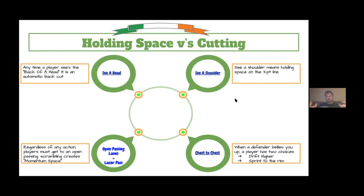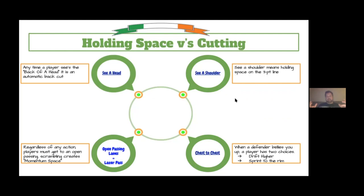In terms of holding space and cutting, we speak about: see a head — that's a back door cut. See a shoulder — that's holding space. Chest to chest — two options: we can either drift high and play a high offense, or we can sprint back into space to attack. But the most important thing for us is always being in an open passing lane. When we are in an open passing lane, we can give laser passes, which now creates a scrambling defense. Terminology is massive for us.